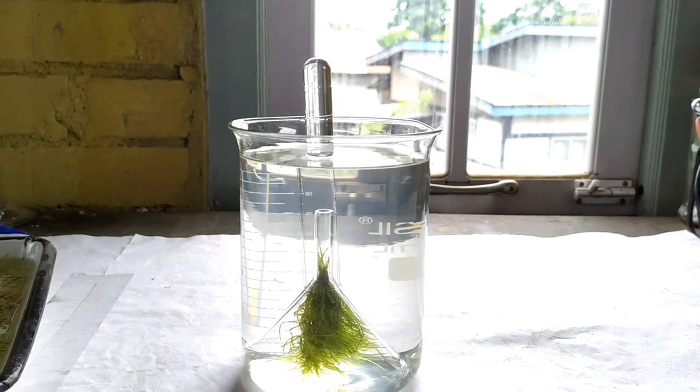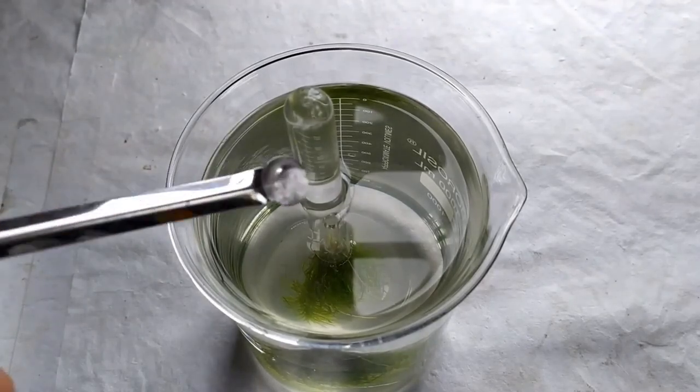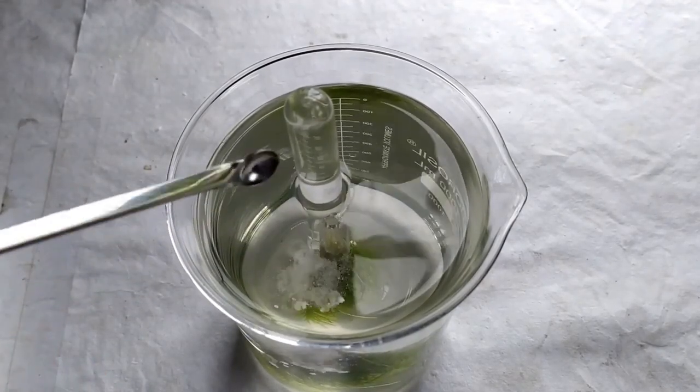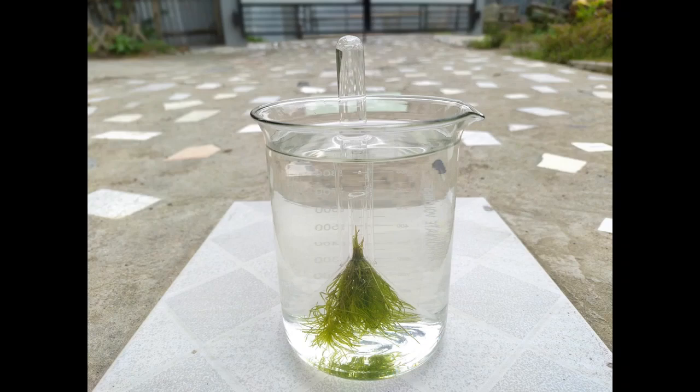The setup is now complete. You may also add a pinch of sodium or potassium bicarbonate into the beaker to kickstart the photosynthesis process. Place the setup in sunlight.